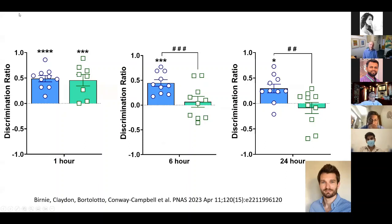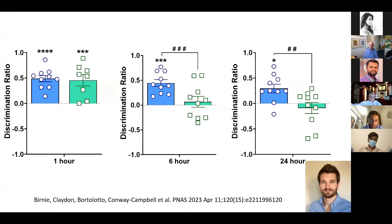But in animals given methylprednisolone, at one hour they could still discriminate and recognized the moved object. By six hours, however, they were totally unaware — they showed no discrimination between the objects at all. Similarly at 24 hours. Giving them a constant corticosterone level with no circadian or ultradian rhythmicity caused them to lose their ability to remember where the object had moved.